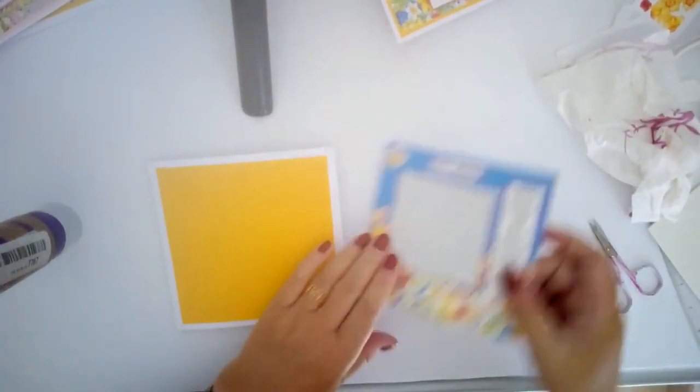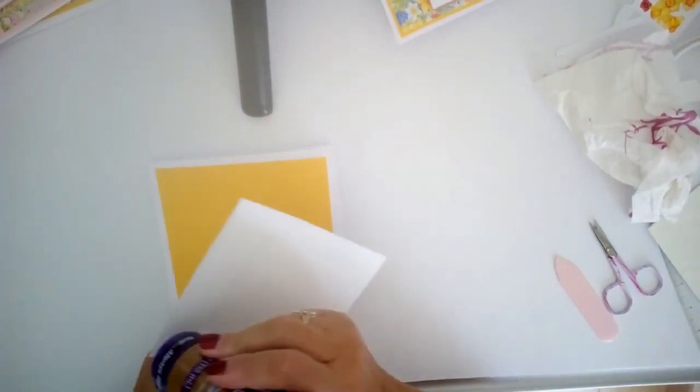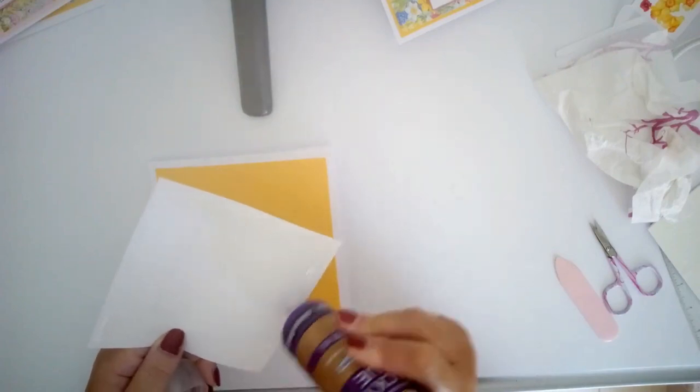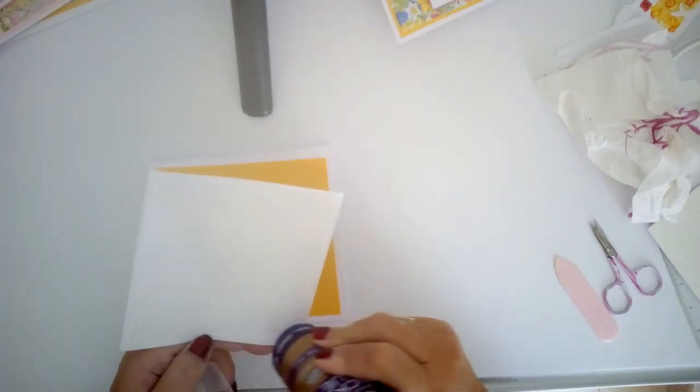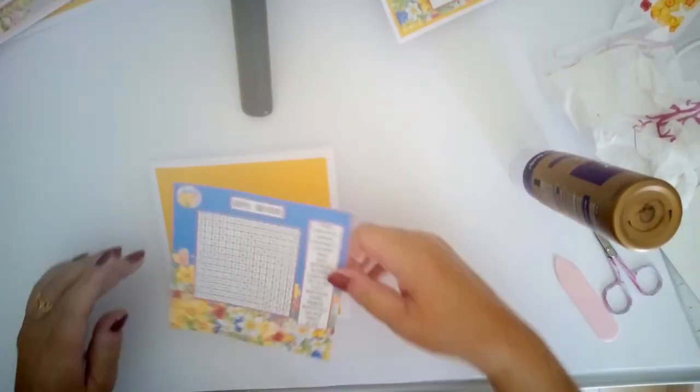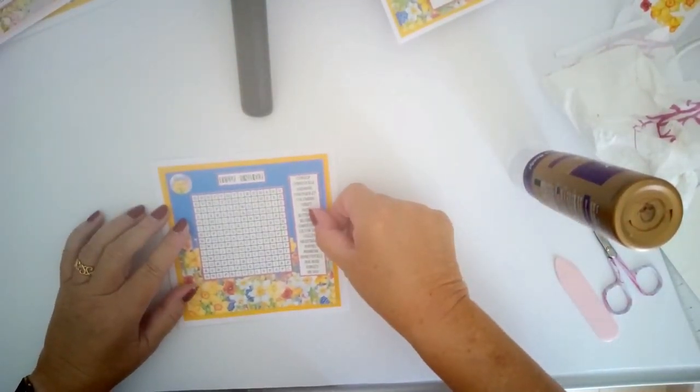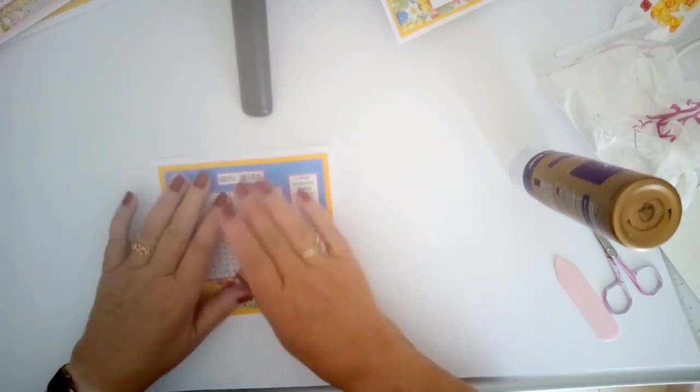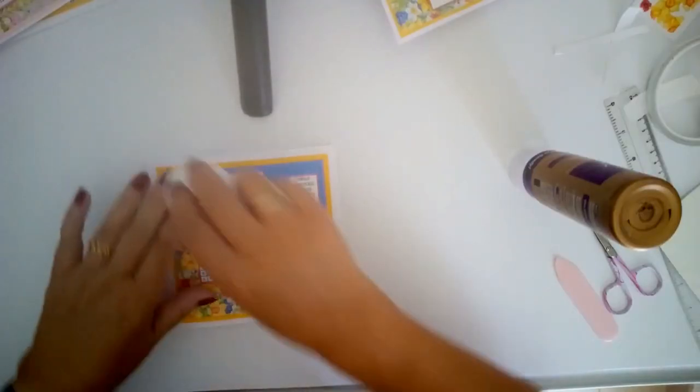That's looking good. And the same again with the card design for the front. Just a bit of glue around the edge, squiggle in the middle, laying that down again and sliding it on the wet glue to get it nice and even. That's looking good.